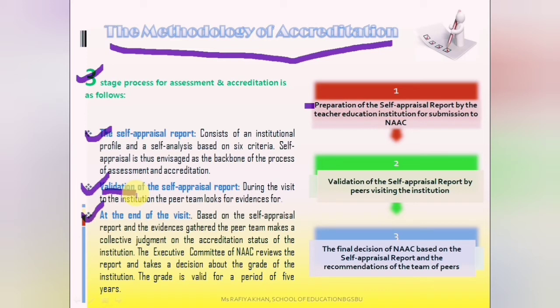After NAAC reviews and confirms the report appears valid, the validation process begins and a peer team is formed. At the time of the visit, which is the last stage, based on the self-appraisal report and the evidence gathered during the visit, the peer team makes a collective judgment on the accreditation status of the institution.